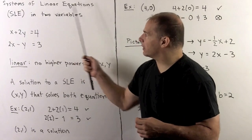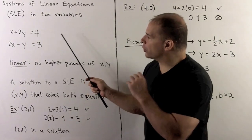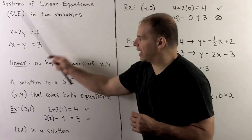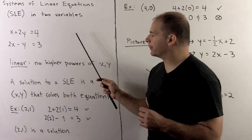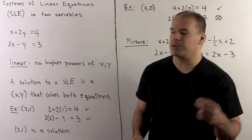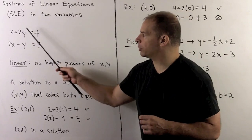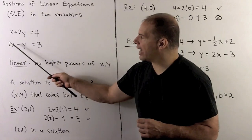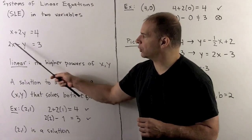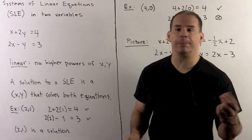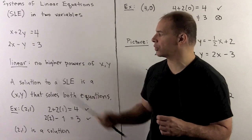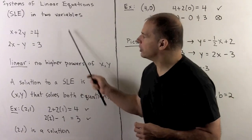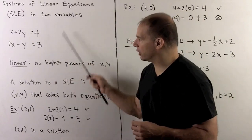Now for a system of linear equations, a solution is going to have to solve all equations at the same time. For instance, if we took (2, 1): here we have 2 plus 2 equals 4, so that's true. Here I have 2 times 2 minus 1, that's 3, equals 3, and that's also true. So (2, 1) is a solution to our system of linear equations.